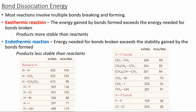We'll see what this looks like on an energy diagram in a second. For each type of bond, we're going to have a different amount of energy that's required to break the bond. For example, in a hydrogen-hydrogen bond, that's 104 kcal per mole, compared to something like a carbon-iodide bond, which is only 56 kcal per mole. So this bond is much easier to break than, for example, a hydrogen-hydrogen bond.